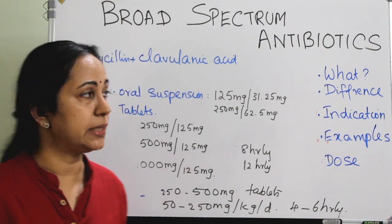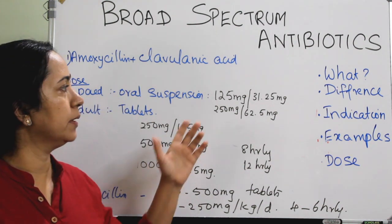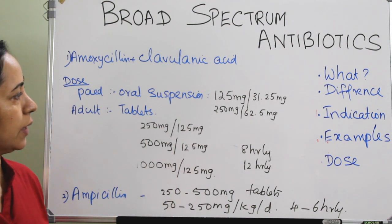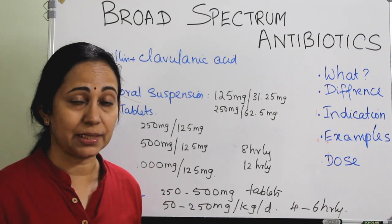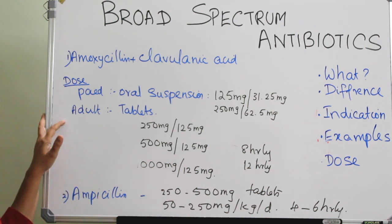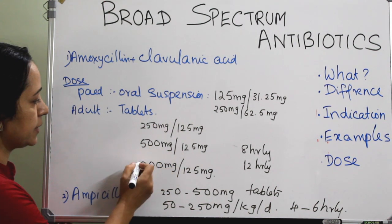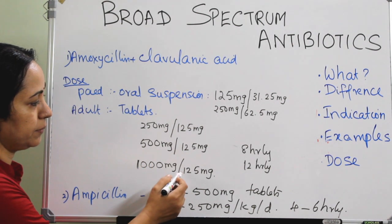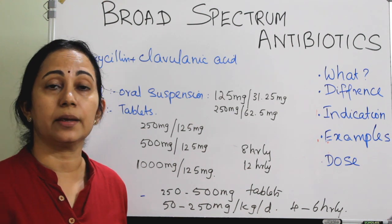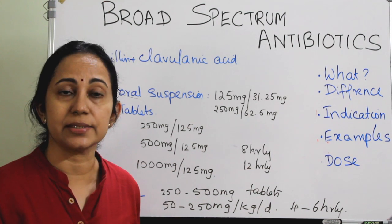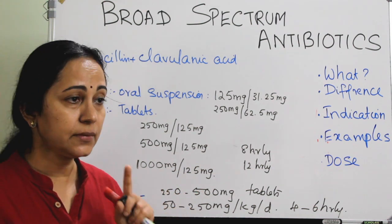Tetracycline, chloramphenicol, and trimethoprim-sulfamethoxazole combination — the so-called co-trimoxazole — and also sulfonamides, are all broad spectrum antibiotics. Amoxicillin-clavulanic acid is a highly preferred combination in ENT. It is available in pediatric and adult forms. Pediatric oral suspension is usually 125 mg amoxicillin plus 31.25 mg clavulanic acid, or 250 to 62.5 mg combinations, given thrice daily. Tablets are available in 250/125, 500/125, or extended release 1000/125 mg, given 8-hourly or 12-hourly. It is used as first-line therapy for acute sinusitis and lower respiratory infections.